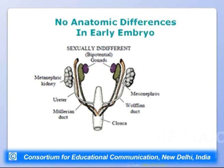In the early embryo, however, there is no anatomical difference — the embryo is sexually indifferent. The gonads are termed bi-potential gonads because they can give rise to either the male gonads (testes) or the female gonads (ovaries), depending on subsequent developmental signals.